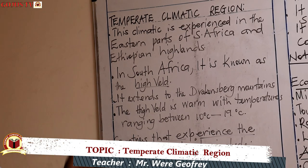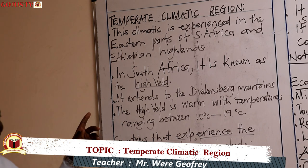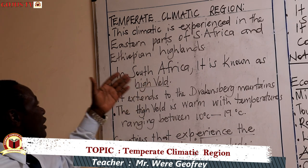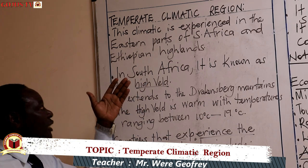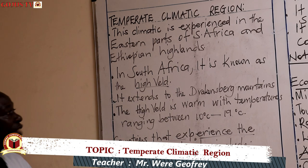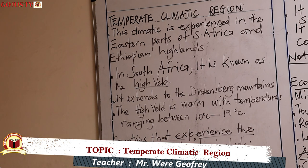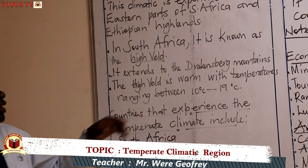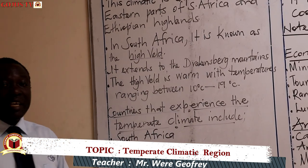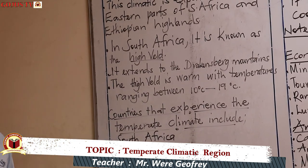Now in South Africa, this region is known as the High Veld. When we talk about the High Veld in South Africa, we are referring to the temperate climatic region in South Africa. It extends to the Drakensberg mountains. Note the spelling of Drakensberg — candidates, can you spell Drakensberg?